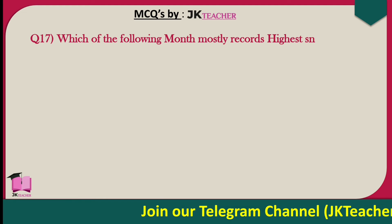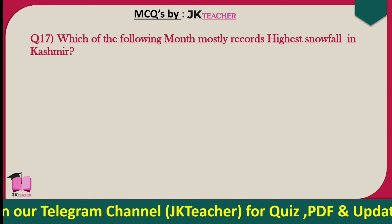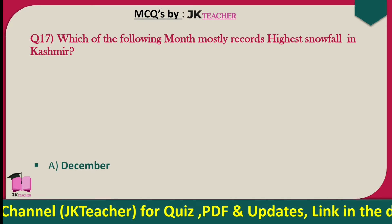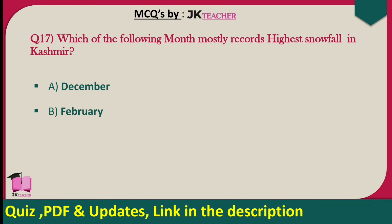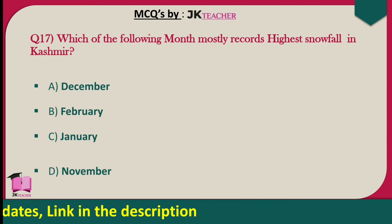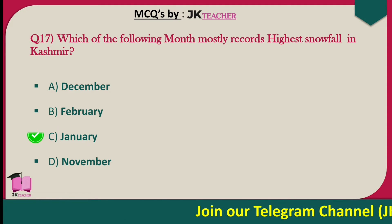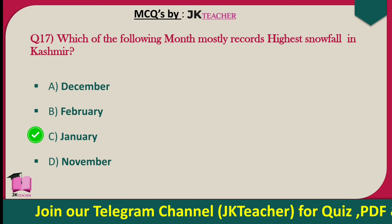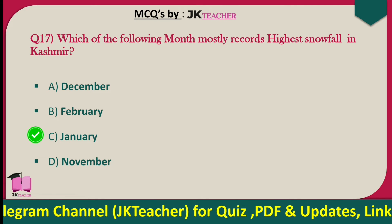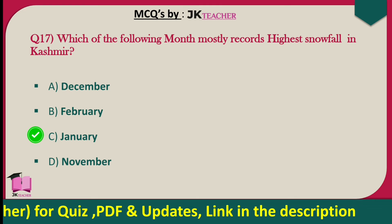Which month mostly records highest snowfall in Kashmir valley? Options are December, February, January, and November. The right answer is option C — January. January mostly records the highest snowfall in Kashmir valley.